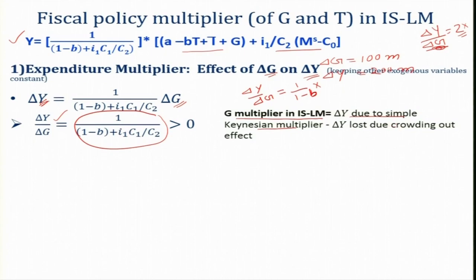We need to add this crowding out component in the fiscal policy multiplier in the IS-LM model. In the simple Keynesian model we have only the basic component without this money market adjustment.